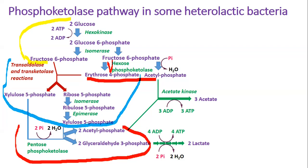In some species, pentose and hexose phosphoketolases are the same enzymatic proteins. The final products of the pathway are commonly lactate, acetate, and ATP.